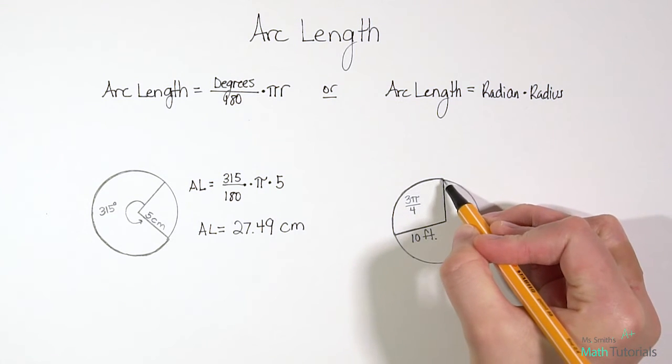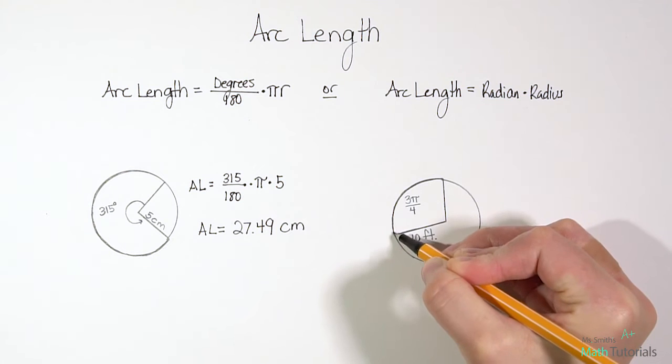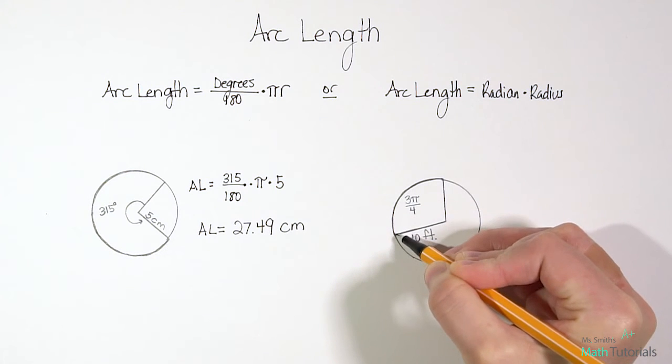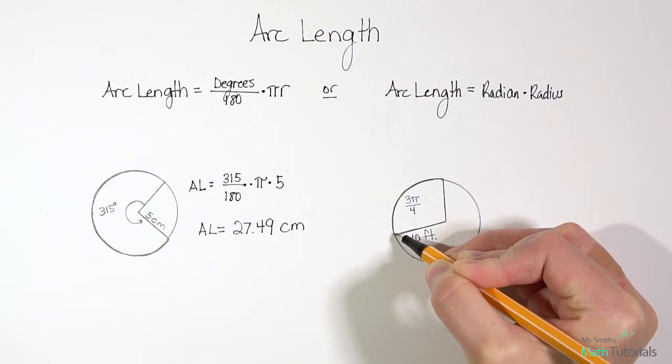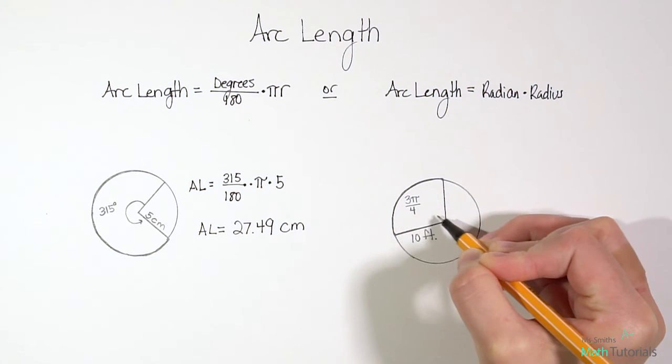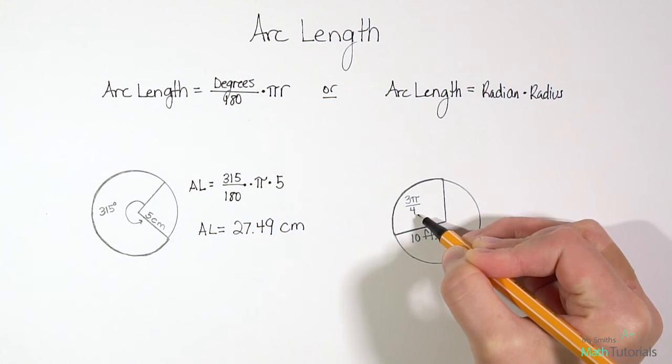In this case we're wanting to know this arc length right here. From here to here we want to know what that distance is. And we're told that the radian is 3π over 4.